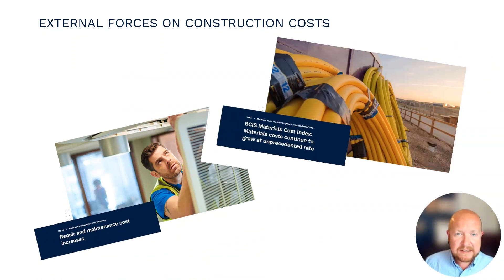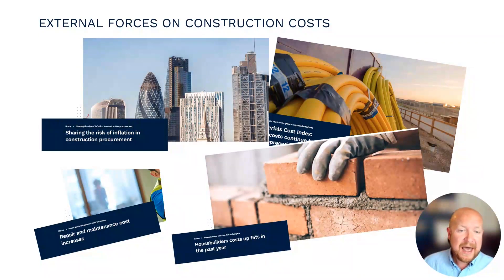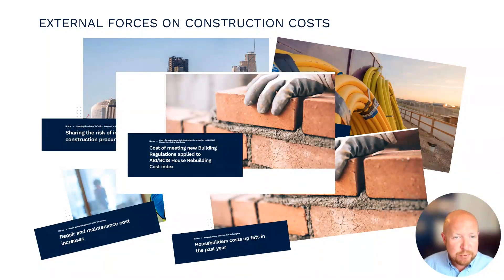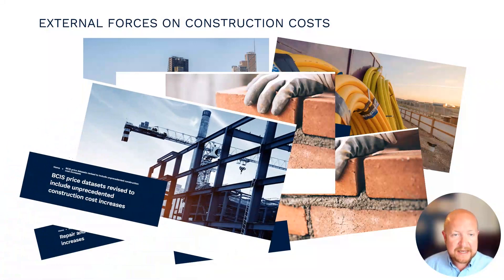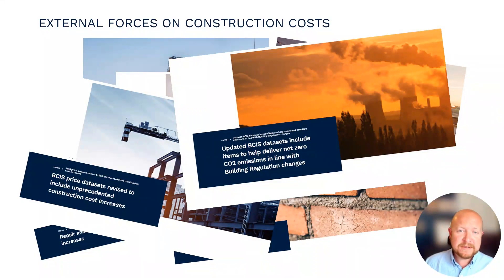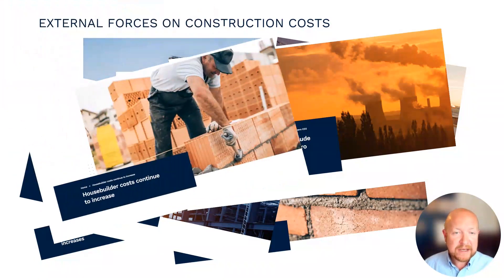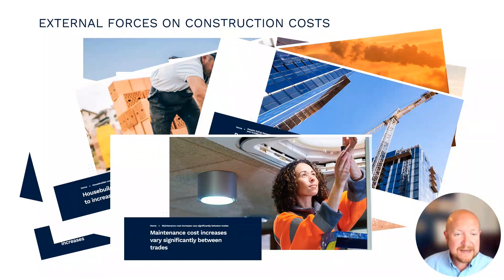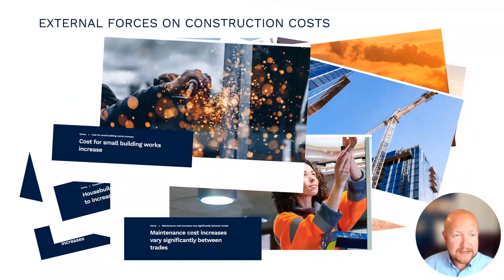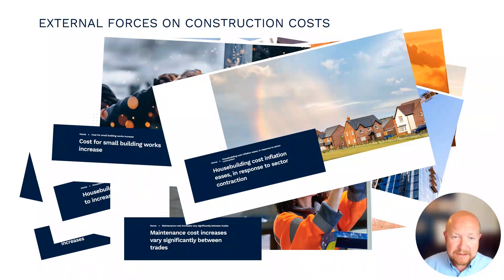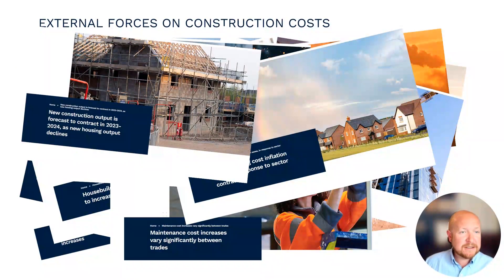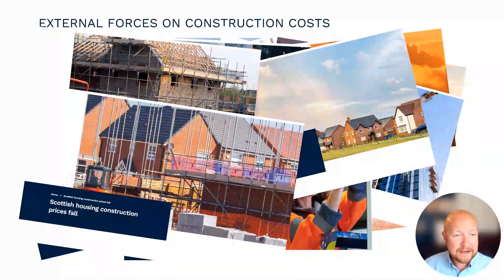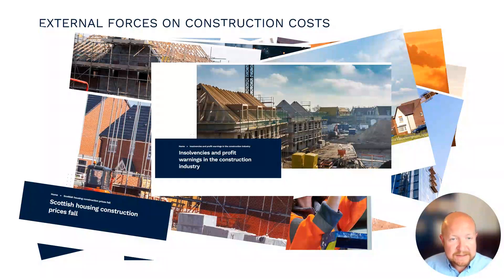These include: repairs and maintenance cost increases, BCIS materials cost index showing materials costs continuing to grow at an unprecedented rate, sharing the risk of inflation in construction and procurement, house builders' costs up 15 percent in the last year, costs of meeting new building regulations, BCIS price data sets revised to include unprecedented construction cost increases, updated data sets including items to deliver net zero CO2 emissions in line with building regulation changes, house building costs continuing to increase despite falling demand, tender prices expected to rise over a five-year building forecast, maintenance cost increases varying significantly between trades, and new construction output forecast to contract in 2023-24 as new housing output declines, with insolvencies and profit warnings in the construction industry.